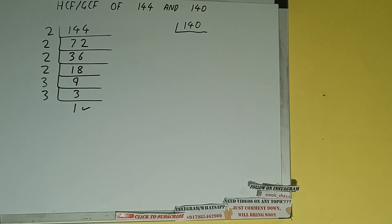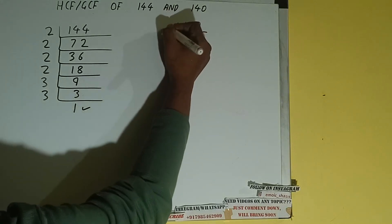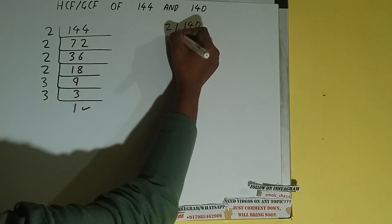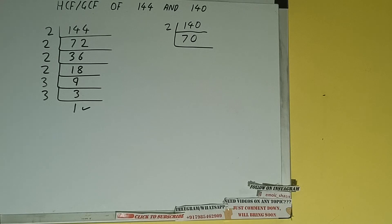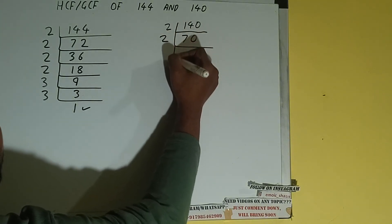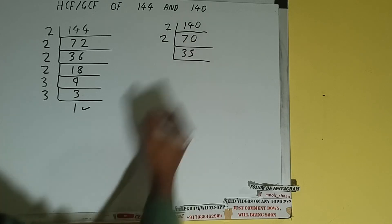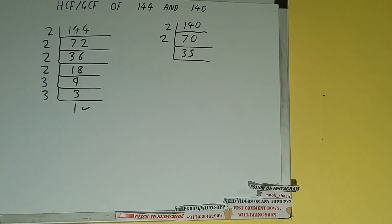Again, we'll check: is 140 divisible by the lowest prime number 2? Yes it is, because the number is even. So we divide it and we get 70. Is 70 divisible by 2? Yes it is, because the number is even. So we divide it and we get 35. Is 35 divisible by 2? No, because the number is odd. We check the next prime number, 3 — 35 is not divisible by 3 either.